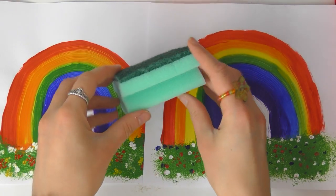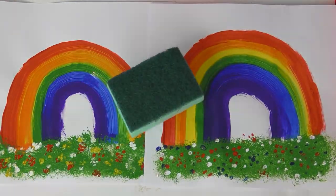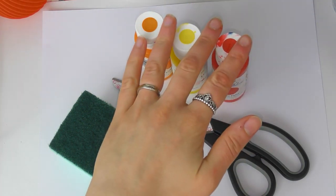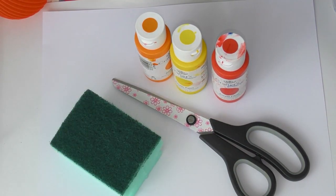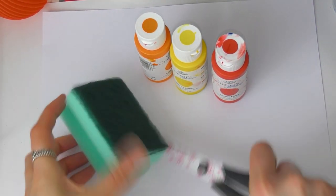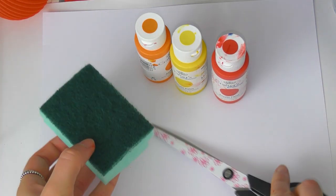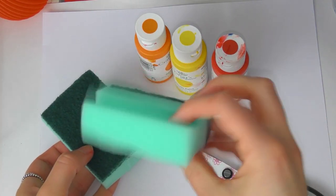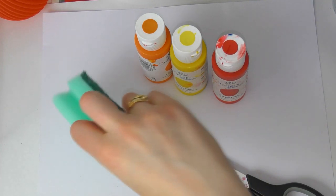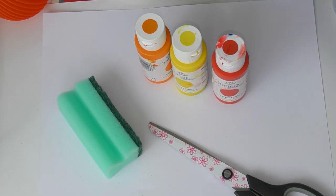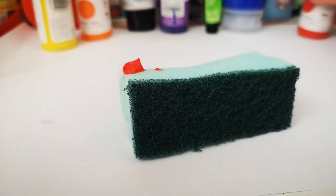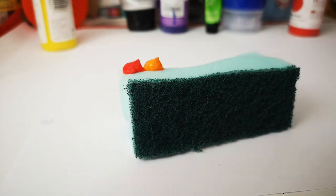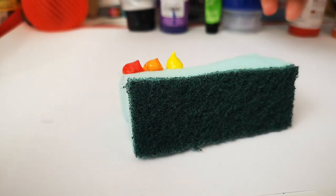First of all I'm going to show you how to make a rainbow painting with a kitchen sponge. You need a kitchen sponge, some scissors, some paint, and a piece of white paper. You need to cut your sponge in half and keep half of it for later because we will use it for our grass. But for now you just need one half and you need to put some blobs of paint in rainbow order like I'm doing here.